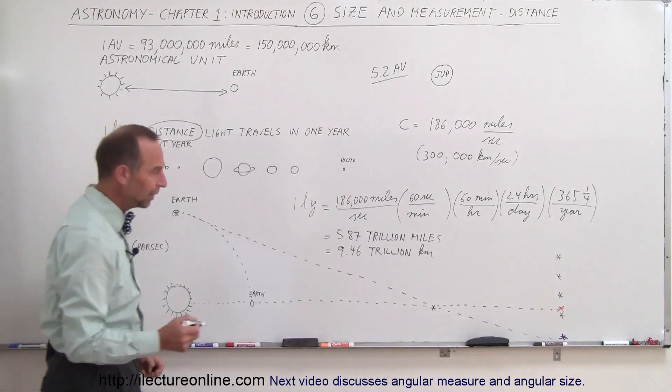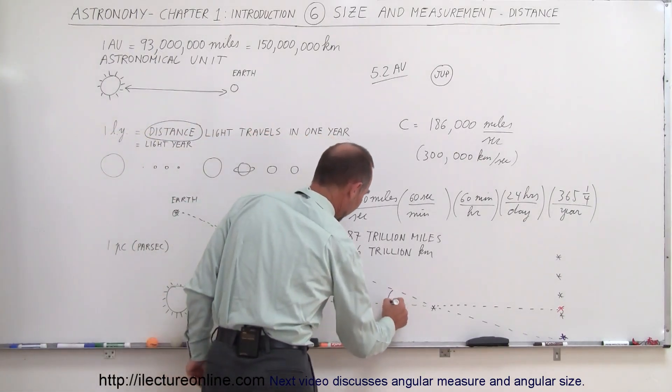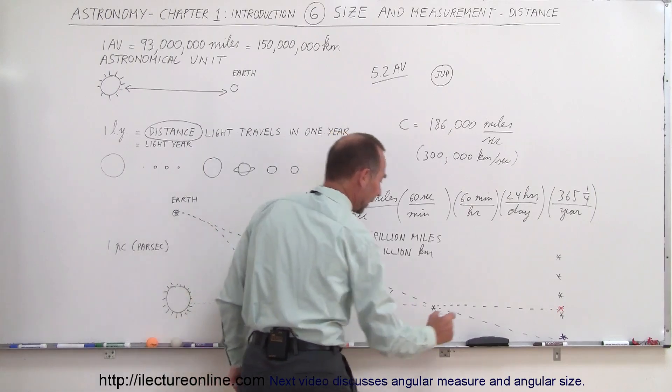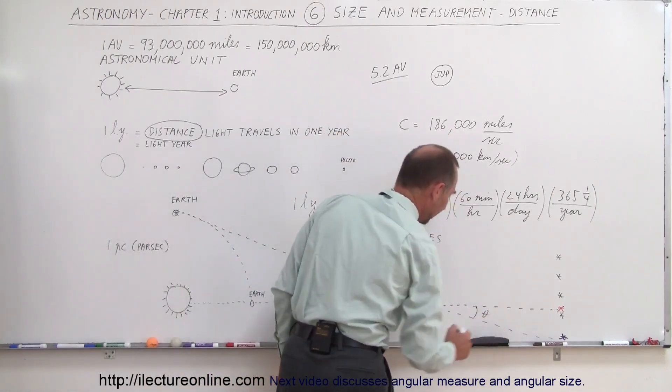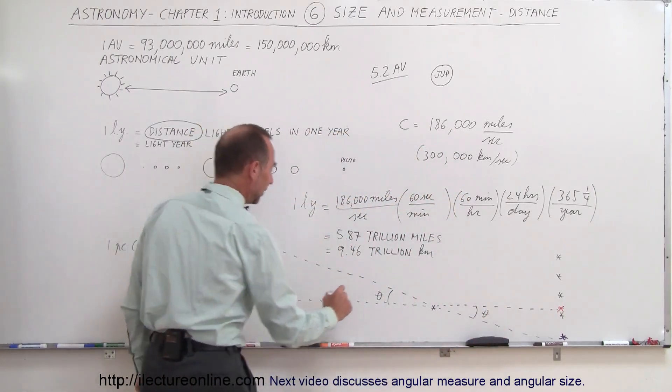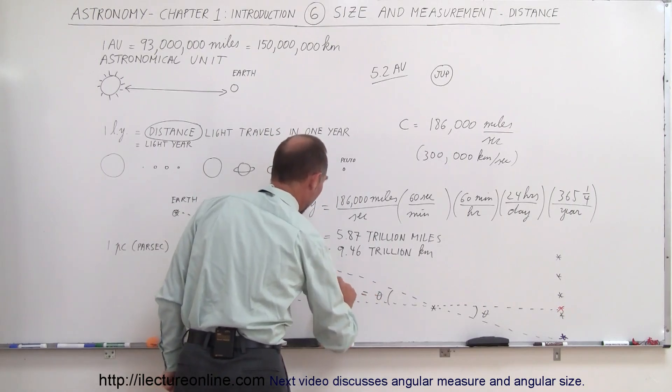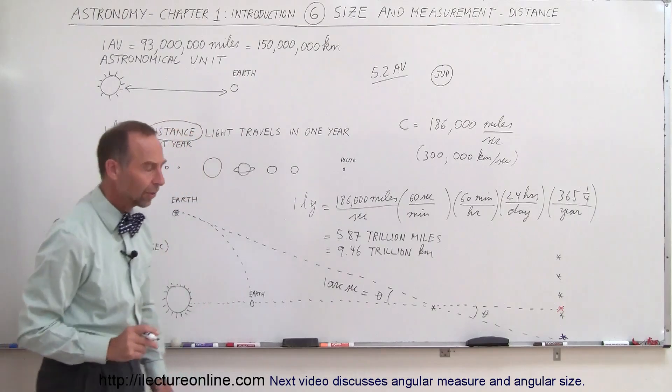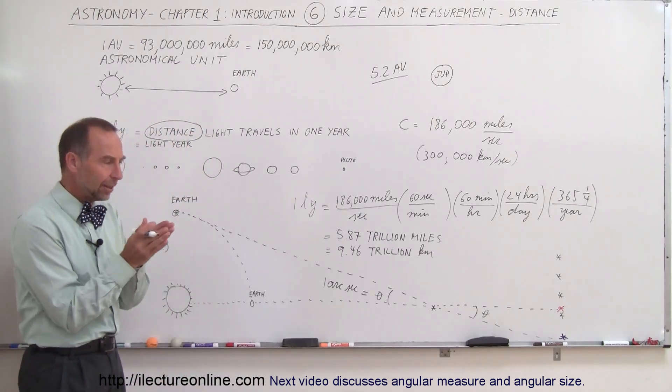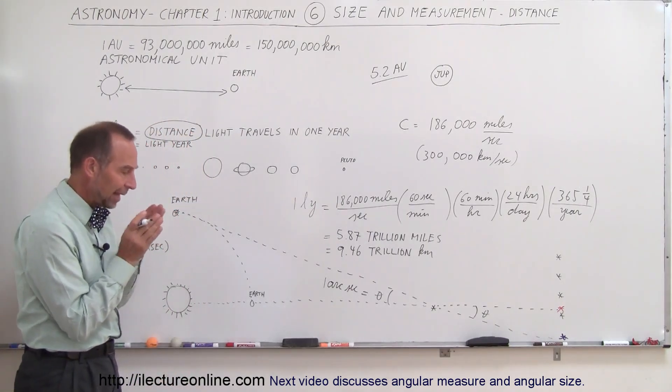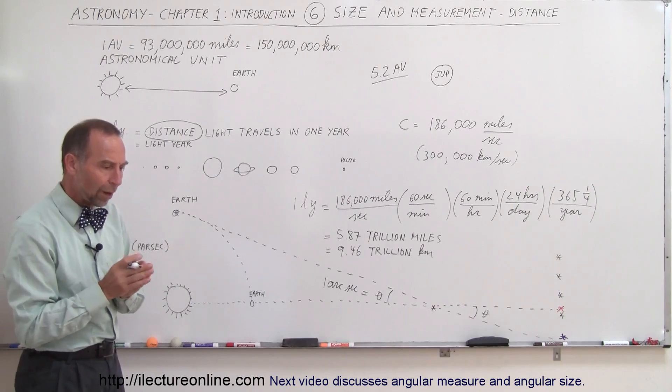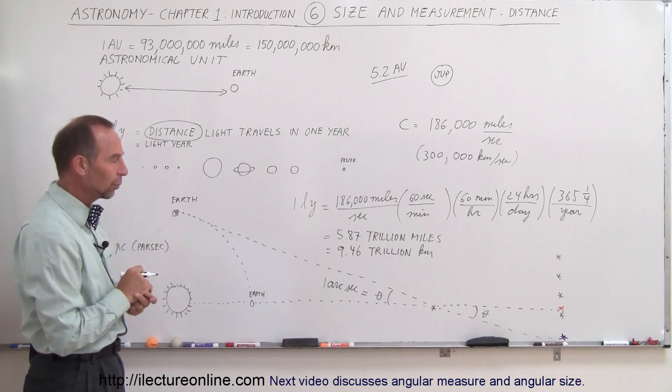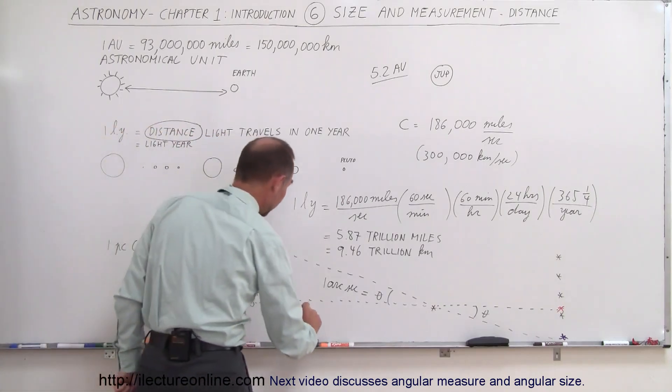So that star will appear to move if we take a picture of the sky three months later. The star will now appear to be in a different place relative to the stars that are so far away that they don't move at all relative to the motion of the earth. Now, it turns out if this angle right here, this angle, let's call this angle theta, and this angle right here, let's call this angle theta. If that angle is equal to one arc second, now what is an arc second? Well, it's an angle that is an angle of measurement of one second, or of arc as we call it.